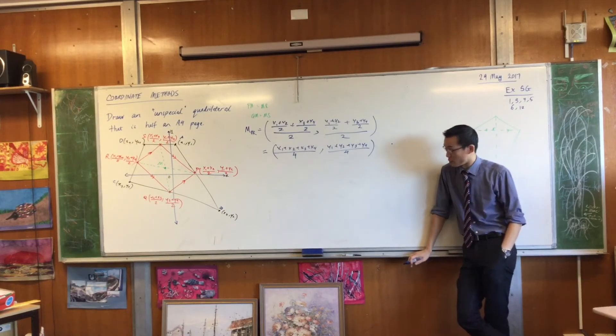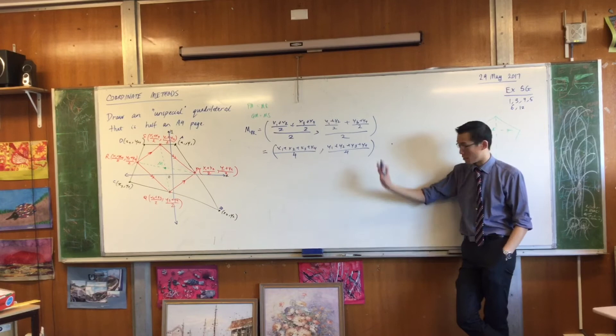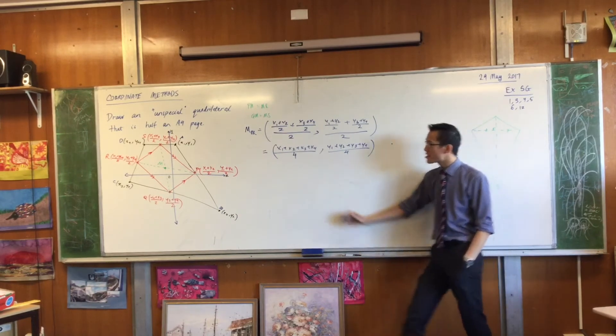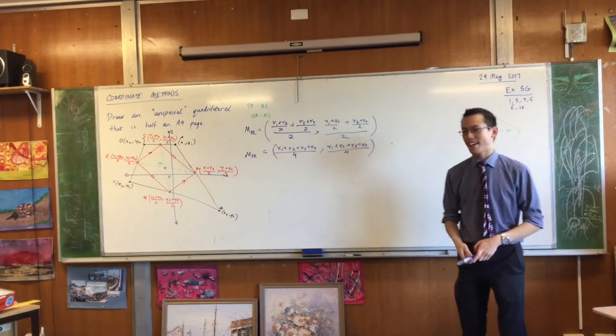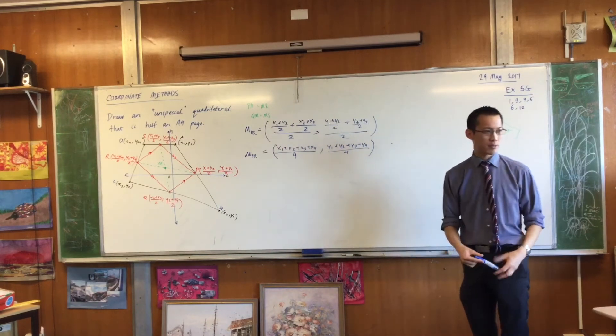Can I simplify this any further? You can't. You don't know anything about X1, X2, X3, X4, etc. That's done. This is the midpoint of PR. Now, just look. Look at the other diagonal. What's it called again? QS.